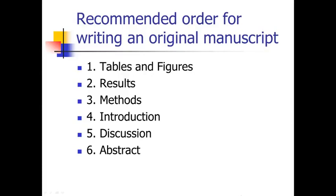Then the next thing I would do is write the introduction section. You could technically write it before these other sections, but what inevitably happens is that knowing what story your data and tables and figures tell helps you set up the introduction. Then I write the discussion section, which is the hardest to write because it involves the most writing and is the most complex. And I leave the abstract to write for the very end — don't try to write your abstract before you've written any of these other sections, because the abstract is just pulling a little bit out of each of those other sections.